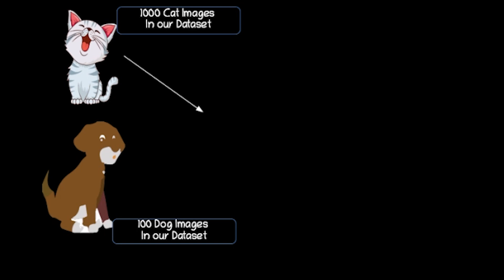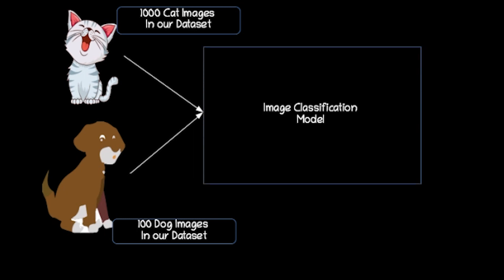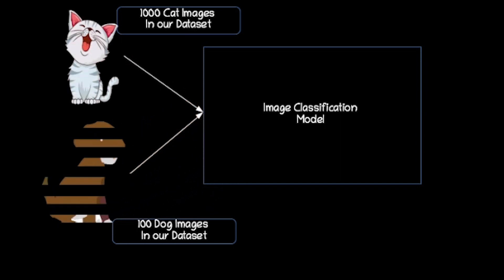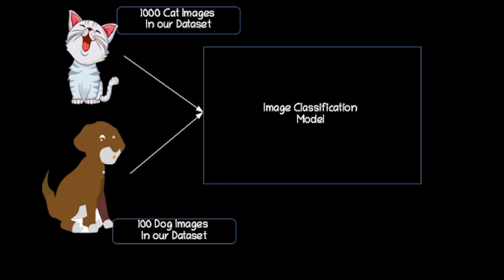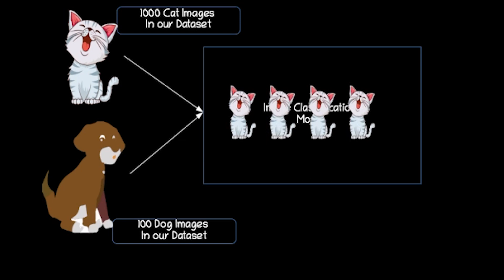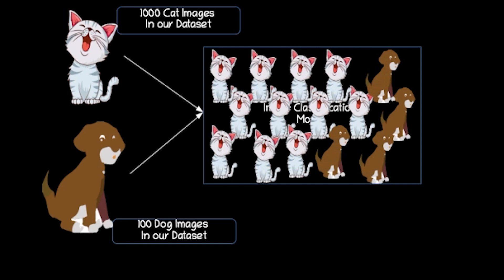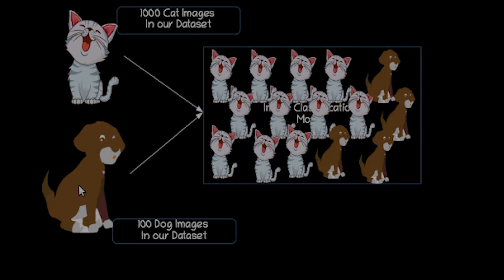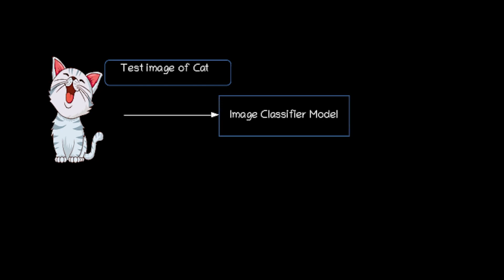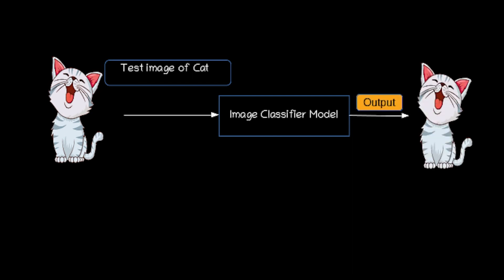Let's train an image classification model with the help of this cat and dog images by sequentially passing them to our image classification model. When training an image classification model on this imbalanced dataset, the model may become biased towards the majority class, which is the cat class. The model's learning process will be predominantly influenced by the cat images, potentially causing it to struggle in accurately recognizing and classifying dog images. Once our model training is done, let's take a test cat image and pass it as input. The model's prediction will ideally be cat since it has been biased towards the cat class during training, indicating the model is performing well on the majority class.